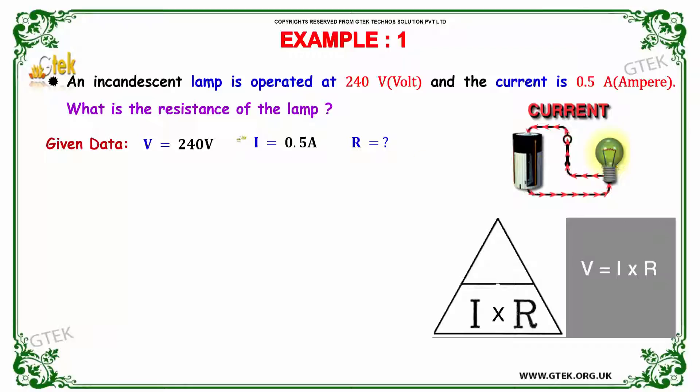So we got our voltage V is equal to 240 volt and current I is equal to 0.5 ampere. I need to find R.